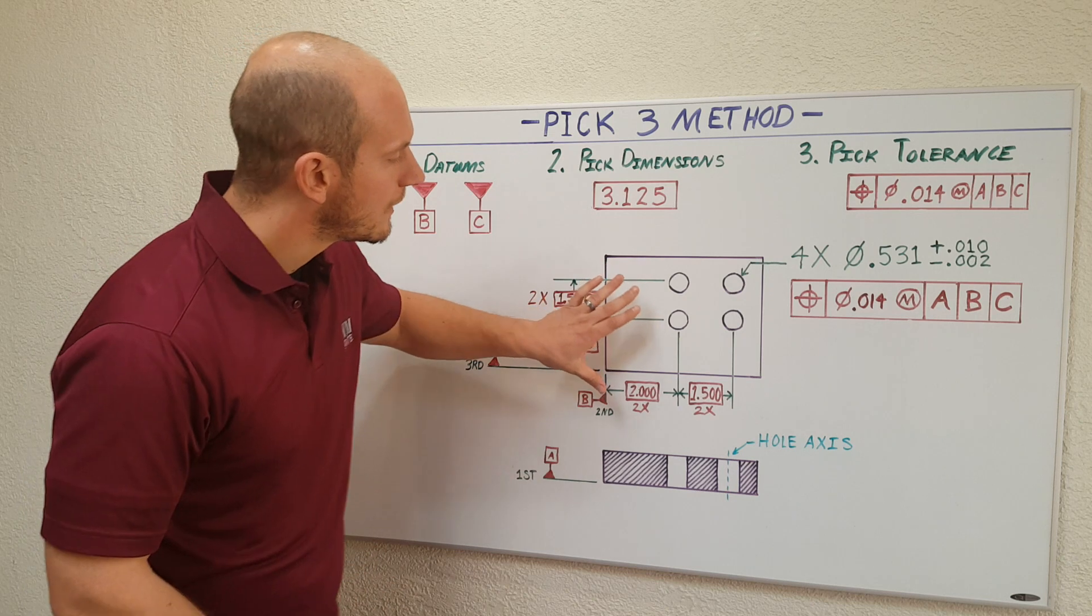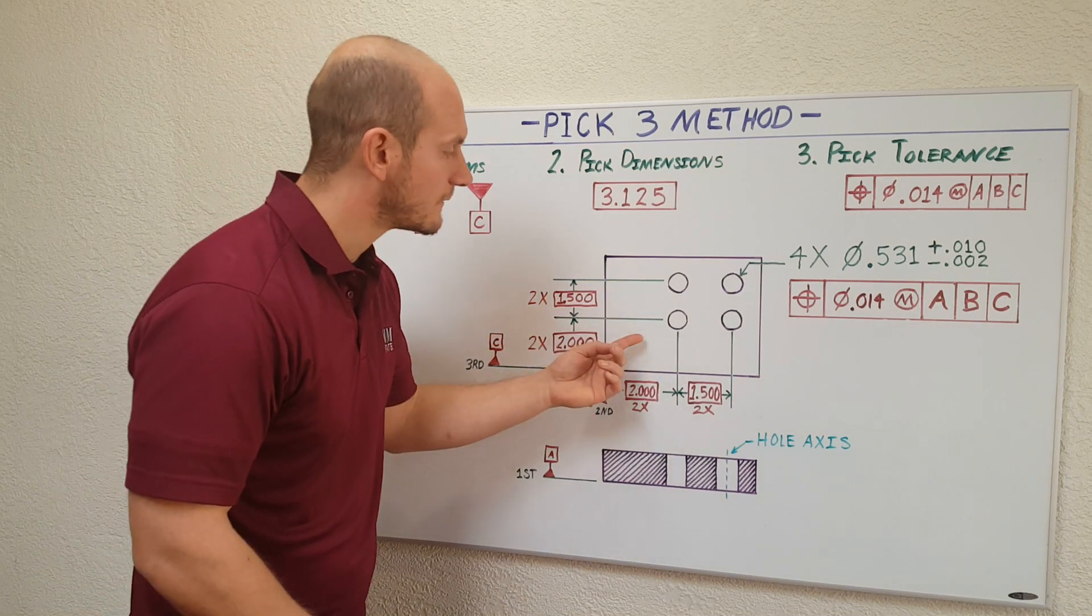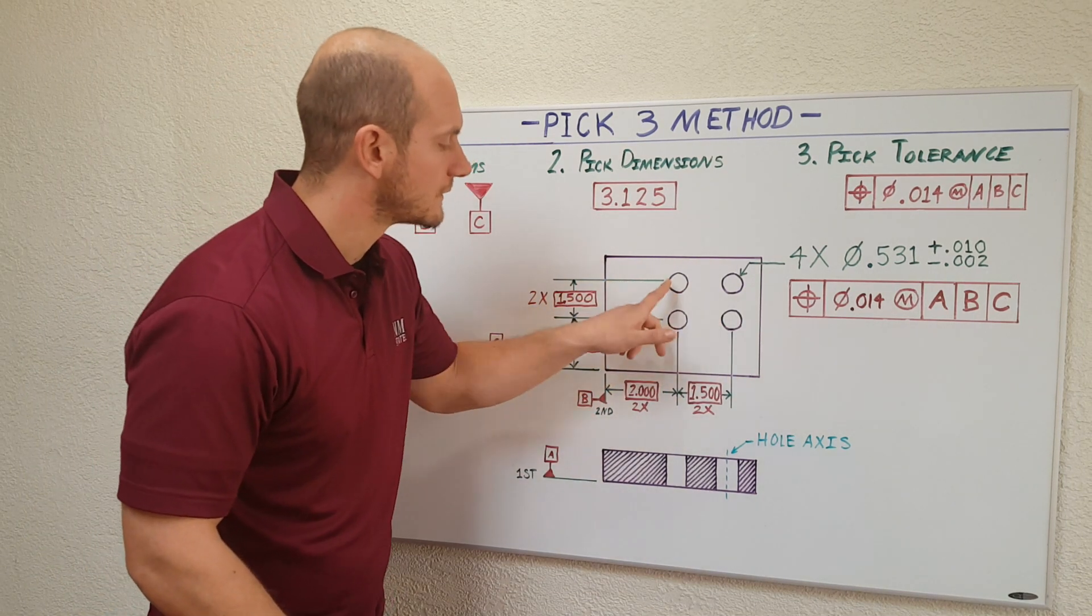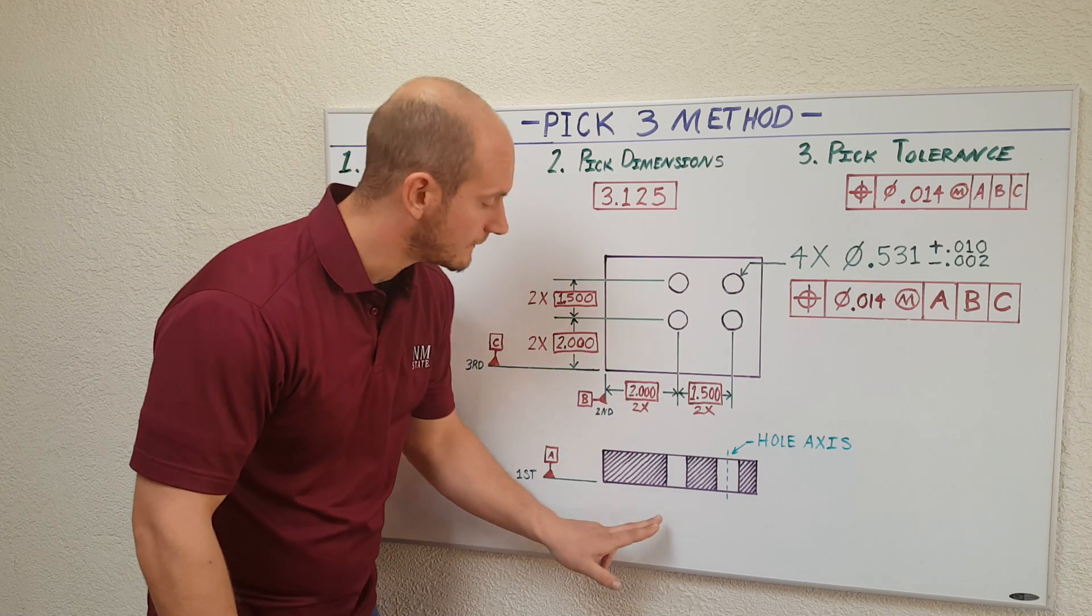So what we have here, we have what you typically see on a drawing. You have your flat plate, you have your four clearance holes. You have your top view, and you have your front section view.